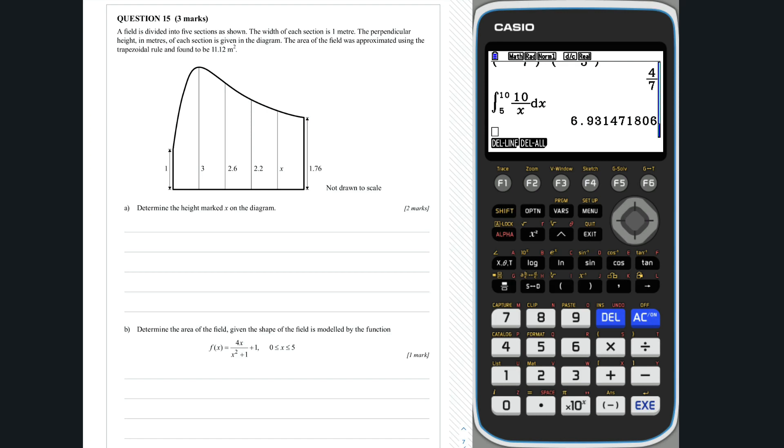Question 15a. We can approximate the area of the field using the trapezoidal rule as follows. In the question, we are told that this area was found to be 11.12 metres squared.